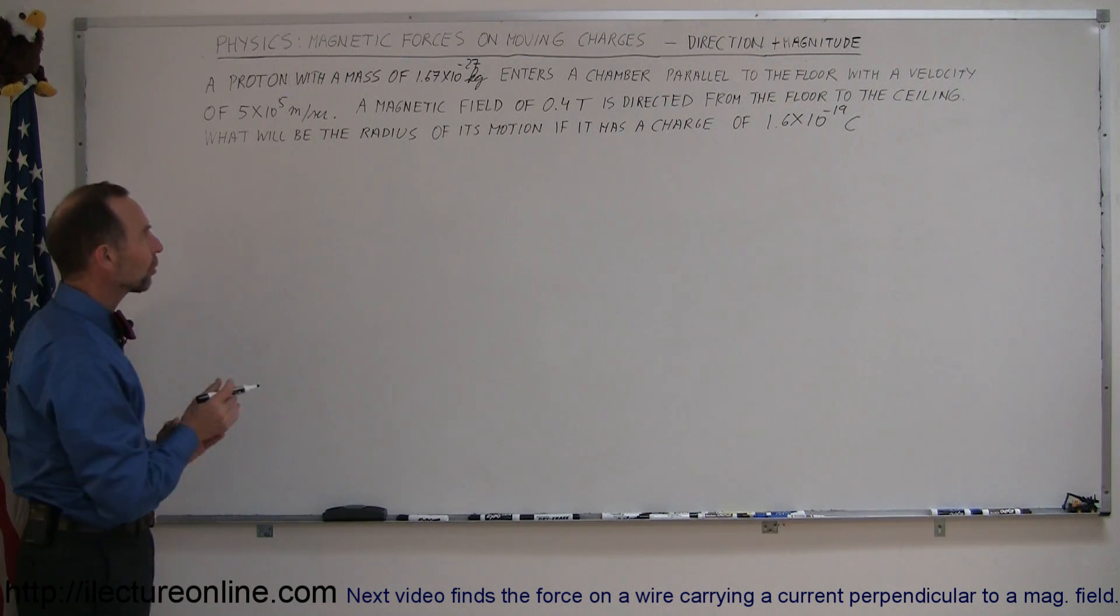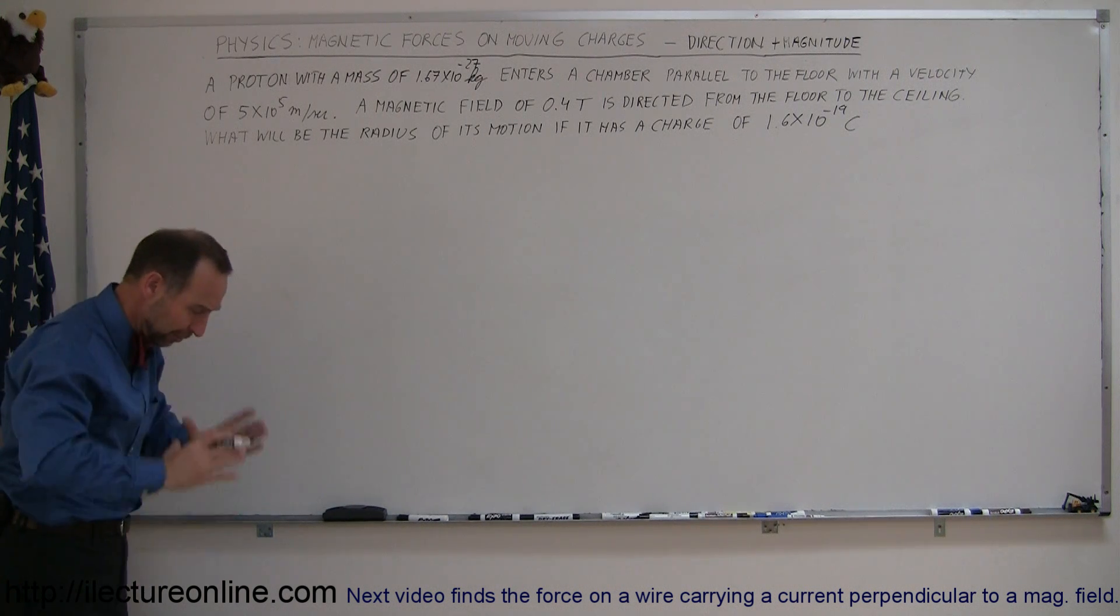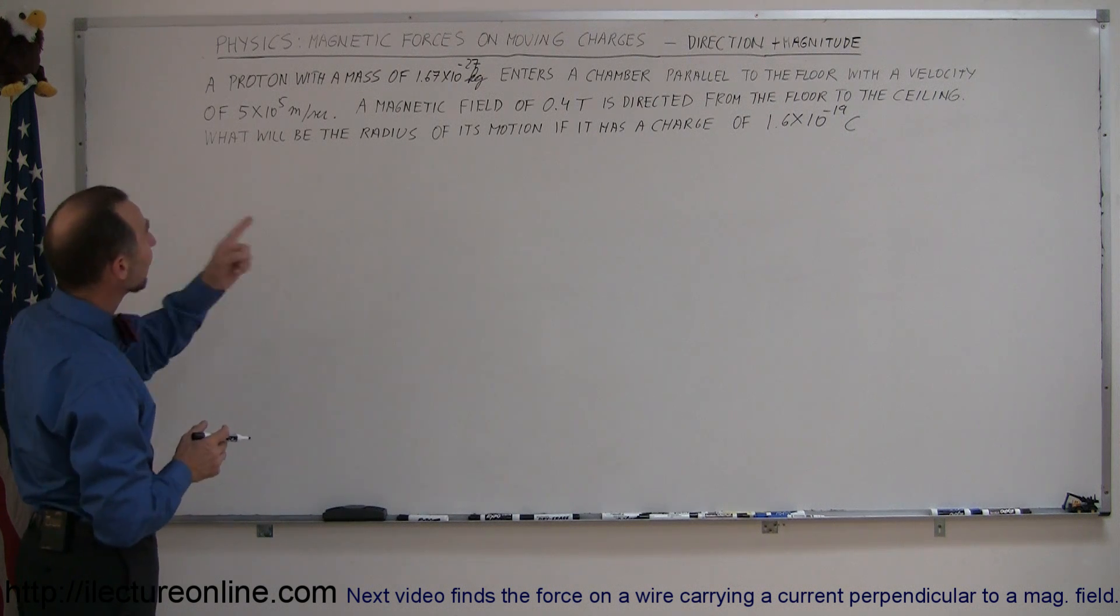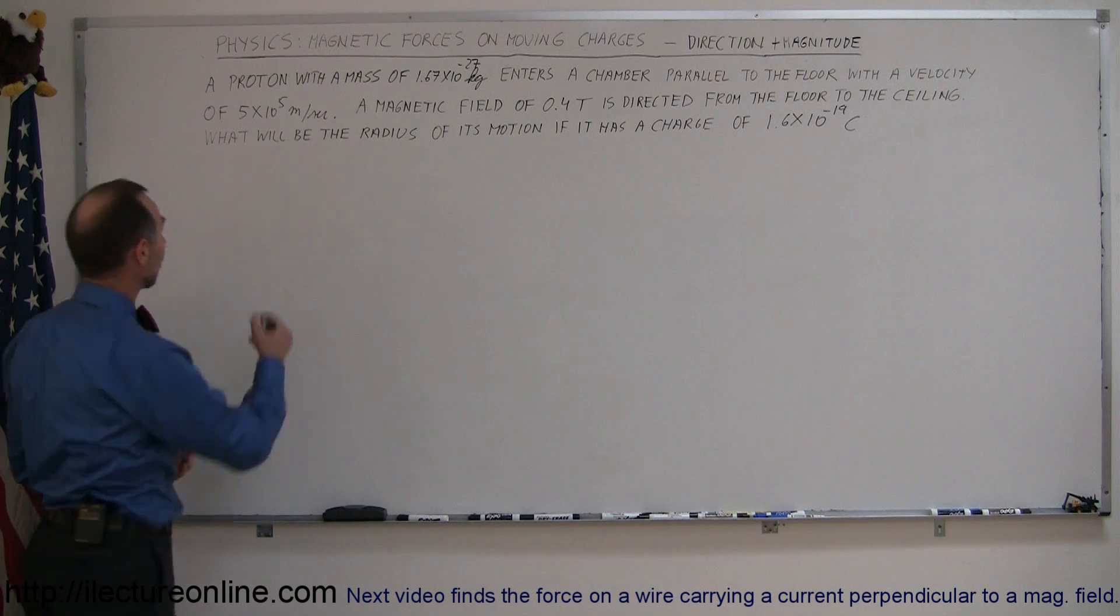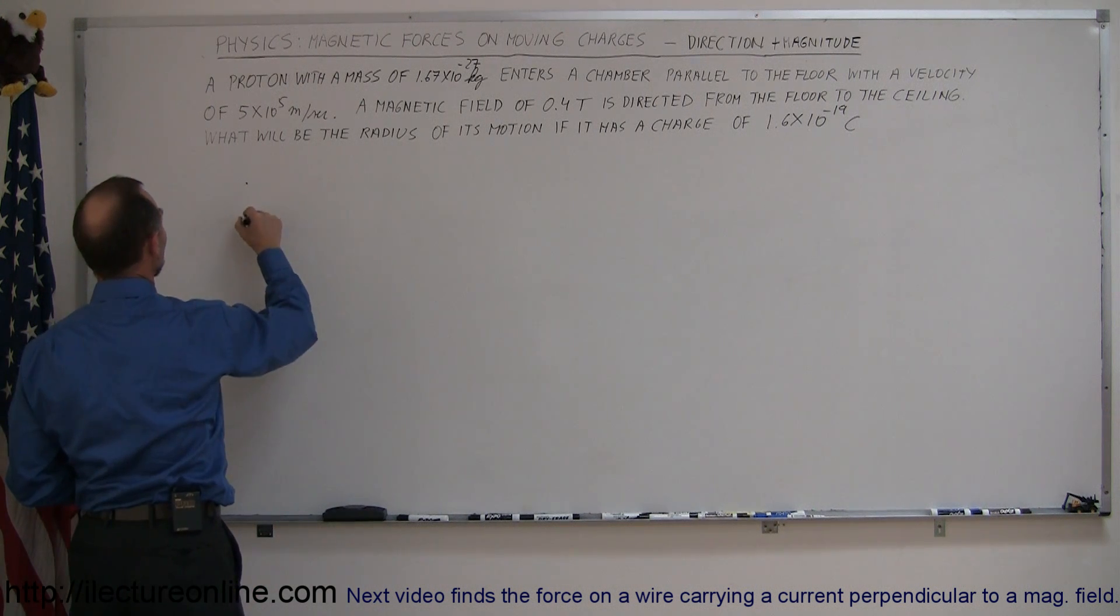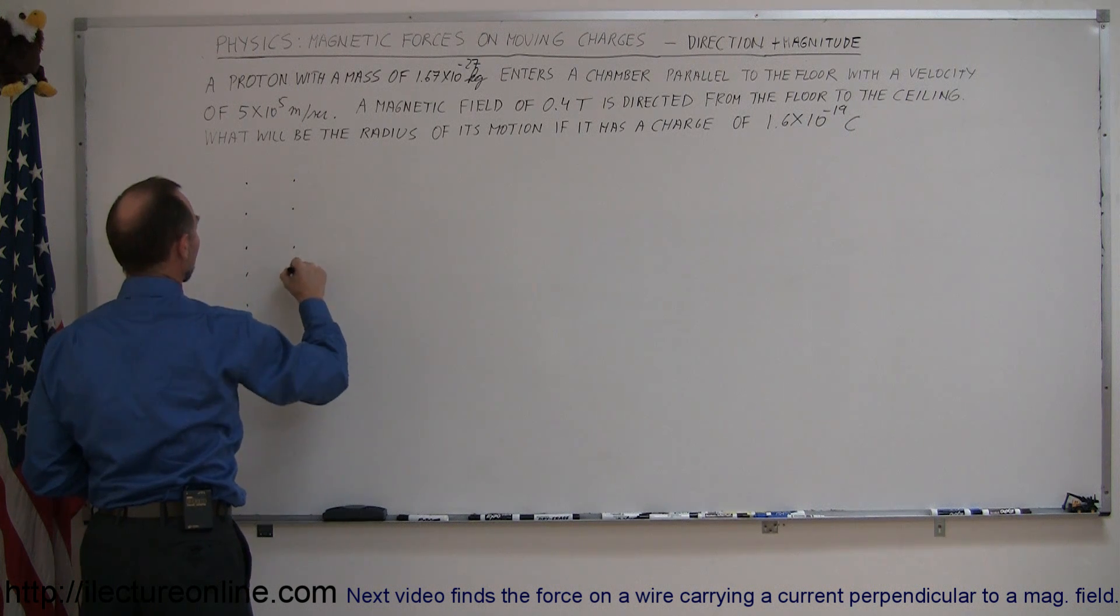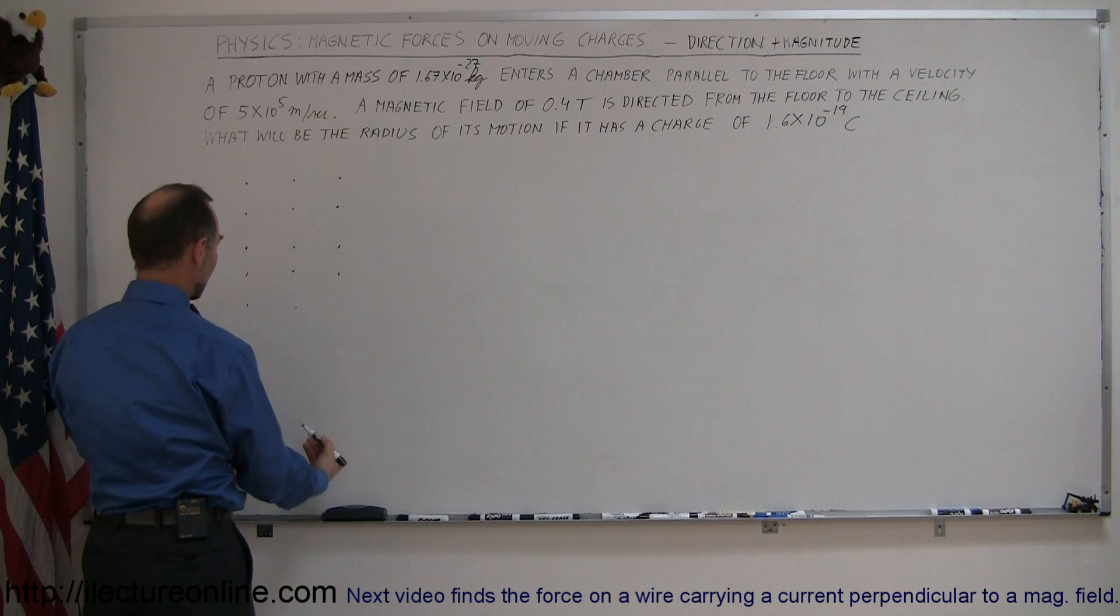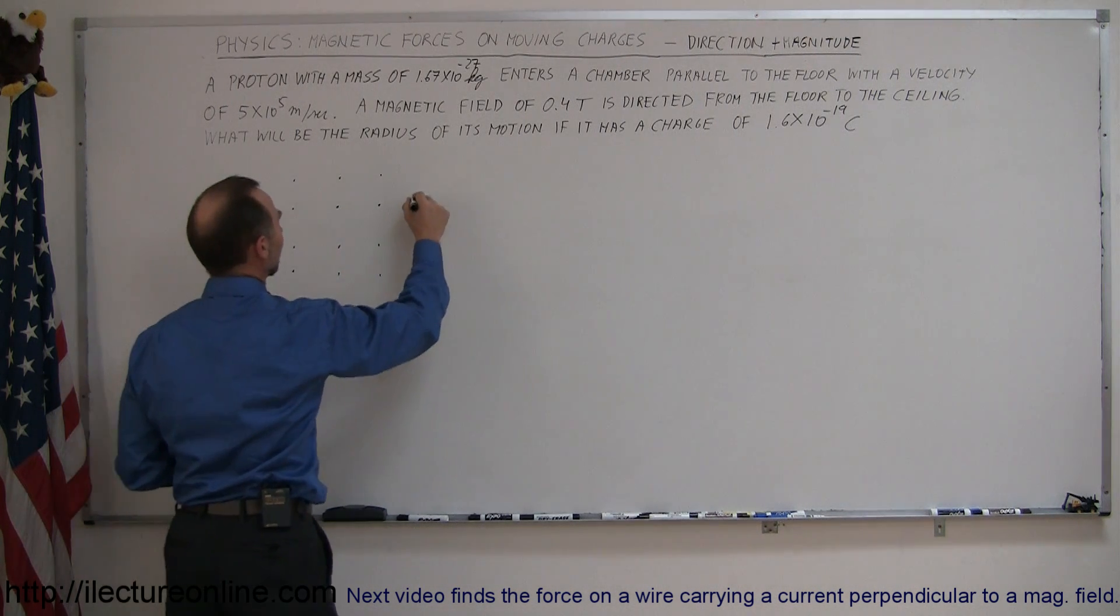So let's draw a picture of what's going on here. Imagine that we're looking at the chamber from above, so a bird's eye view of the chamber. And since the magnetic field is directed from the floor to the ceiling, it would be coming towards us, so we can represent the magnetic field in that chamber by the tips of the arrows, like this. This indicates that the magnetic field is coming from the bottom up, like so.